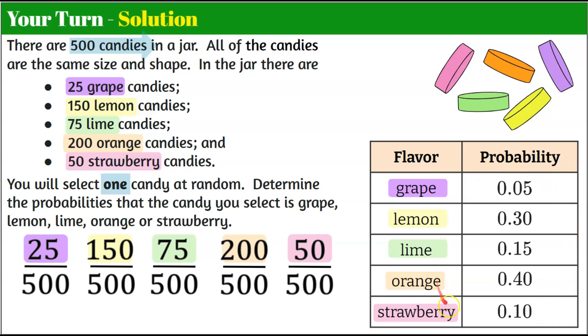Looking at our probability model, we can see that it's very easy to compare the probable outcomes and see that orange is the most likely to occur and grape is the least likely to occur. So you could say to somebody, you have a 5% chance of getting a grape or a 40% chance of getting orange.